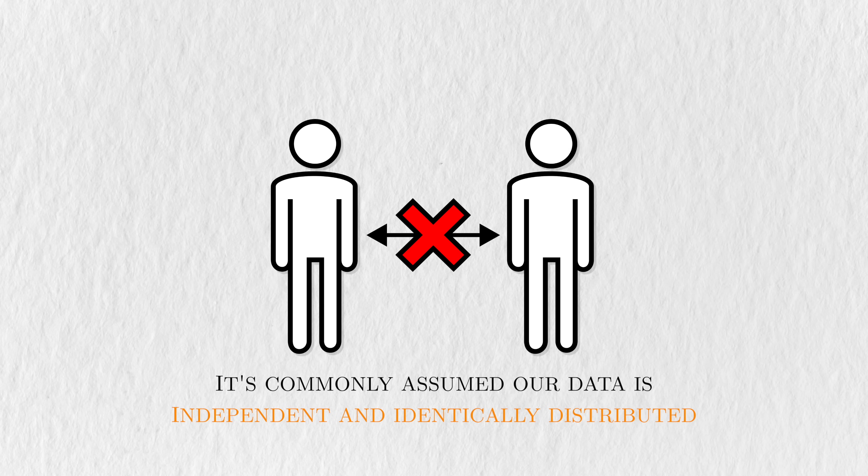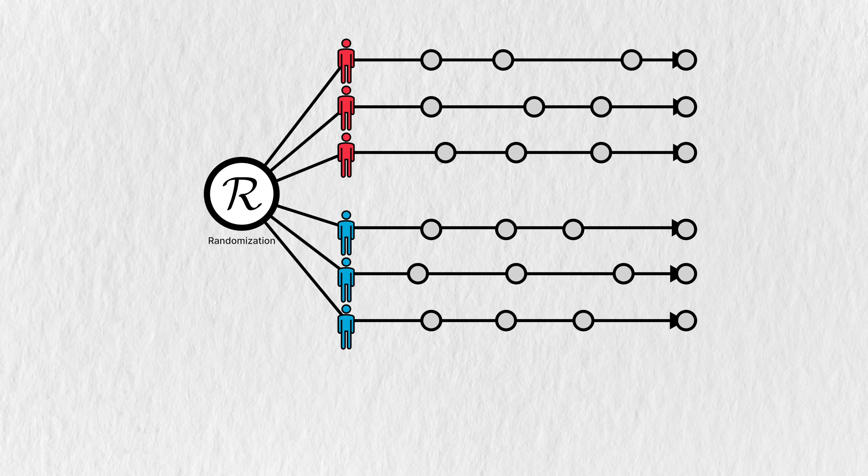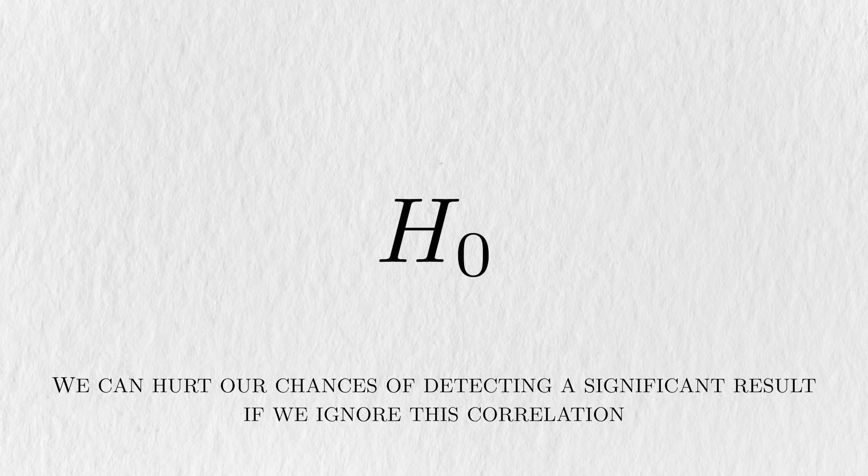A standard assumption of many common statistical models is that our data is independent and identically distributed. Longitudinal data violates this assumption because data coming from the same person is likely to be similar to each other. That is, the data are likely to be correlated. We can hurt our chances of detecting a significant result if we ignore this correlation.